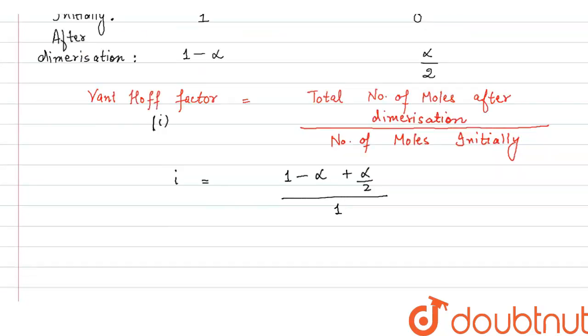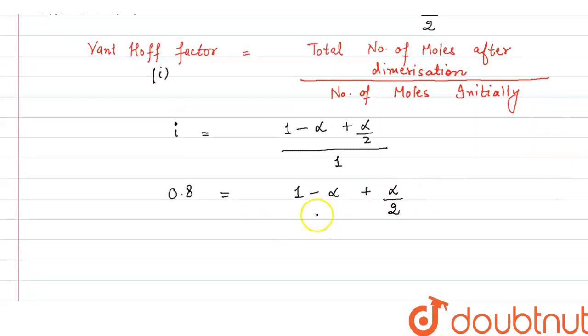This is the formula that we will use here. Basically i in the equation is already given, that is 0.8. So 0.8 will be equal to 1 minus alpha plus alpha by 2. Now we will calculate this.